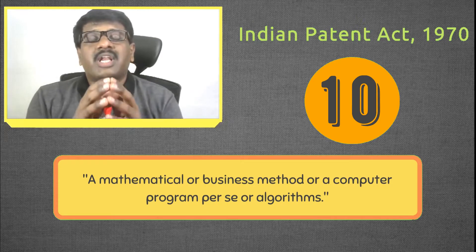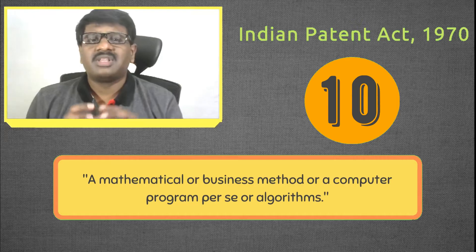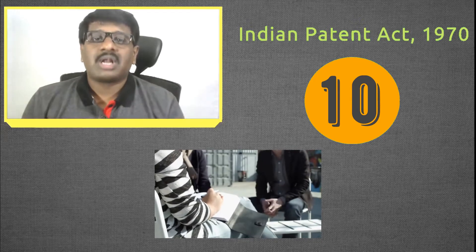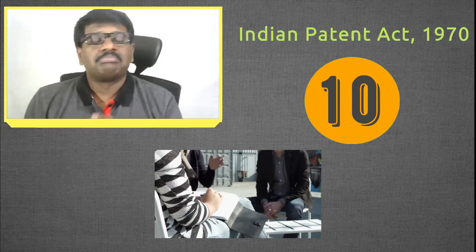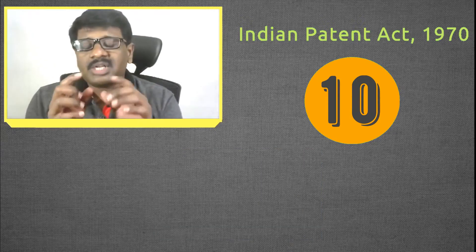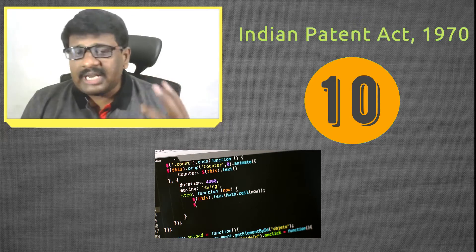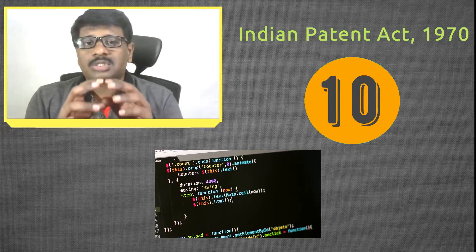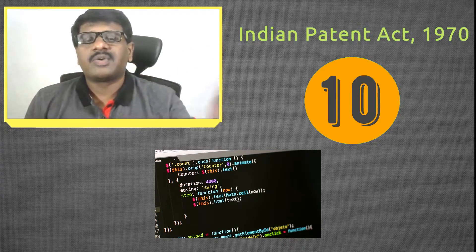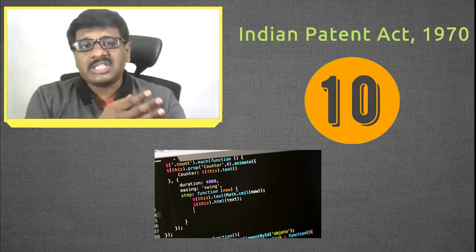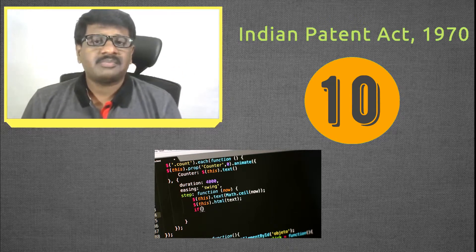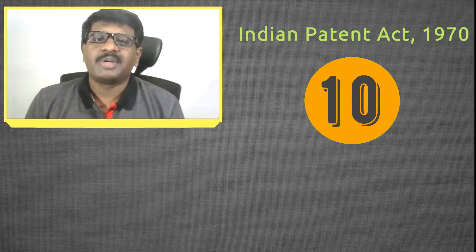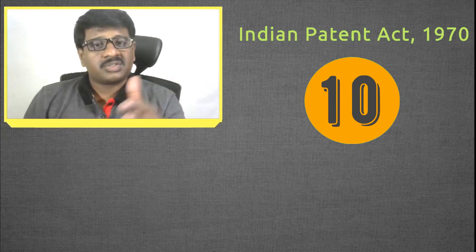Any mathematical method, any business method, or any computer program cannot be patented in India. For example, if somebody has created a new business technique or method to get more clients for a particular product in less time, such a method is not patentable. Similarly, if you have created a new mobile app, that mobile app is not patentable. However, you can apply for copyrights for mobile apps, as computer programs are considered equivalent to literary works and are more eligible for copyright than for a patent.